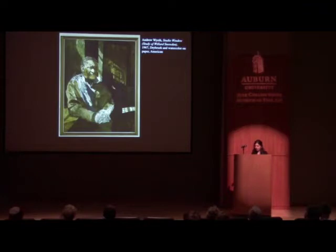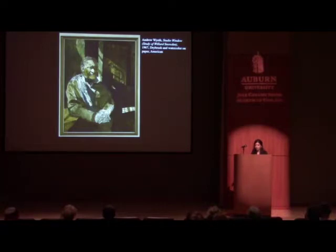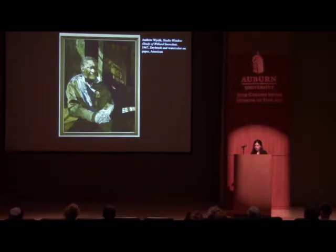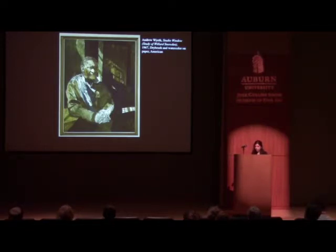We also wanted our exhibition to be diverse in terms of who makes up the laboring body, including diversity in race. As the story goes, Willard Snowden was a retired merchant seaman who came to Wyeth's home one night looking for work. Wyeth was said to have been electrified by the sight of him and immediately took a liking to him. He allowed Snowden to move into the abandoned schoolhouse on his property that he used as a studio. Wyeth saw Snowden as an elegantly speaking drifter passing through like a modern wise man cloaked in mystery. Snowden represents labor in the context of our exhibition because of his past as a merchant marine and his work as Wyeth's studio assistant.